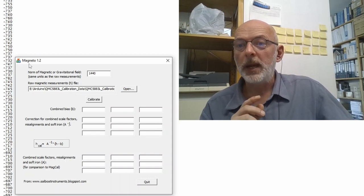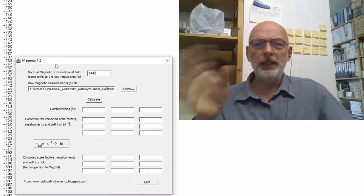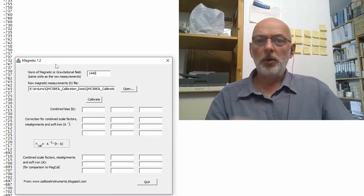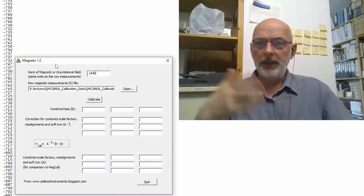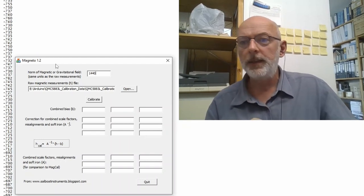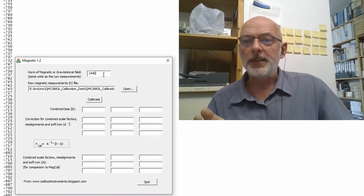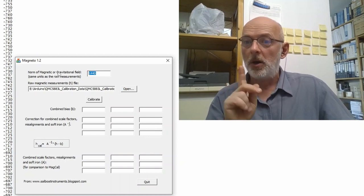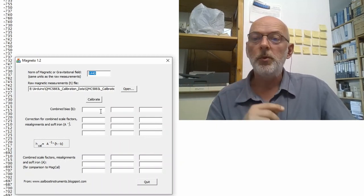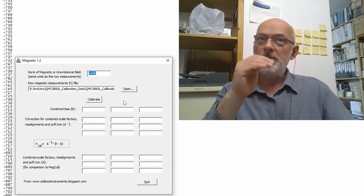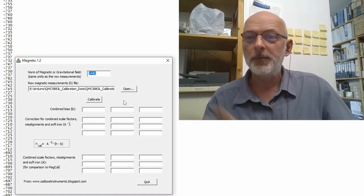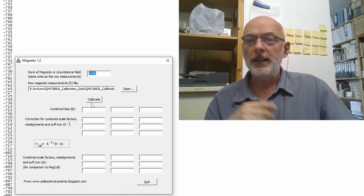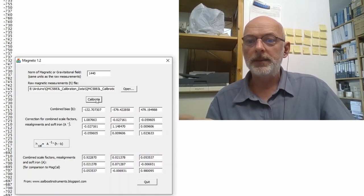Here's the Windows software, Magneto 1.2. It's really just an executable that you start, you don't need to install anything. I put a download link and links to a blog about it in the description. I've entered my 1440 at the norm of magnetic or gravitational field. Obviously you can use the same software to calibrate three-axis accelerometers. I selected my data file, and now I click calibrate.